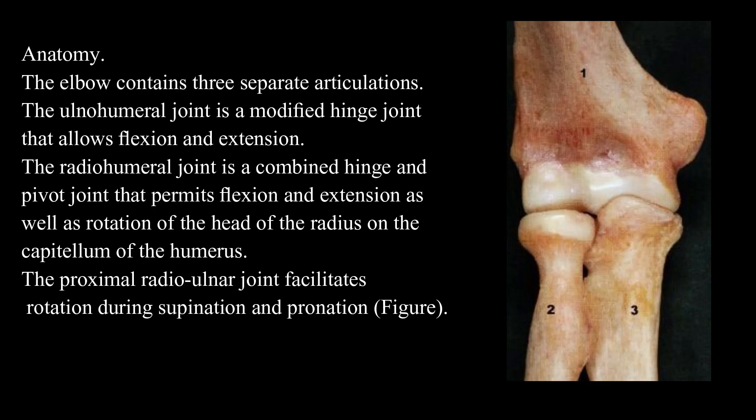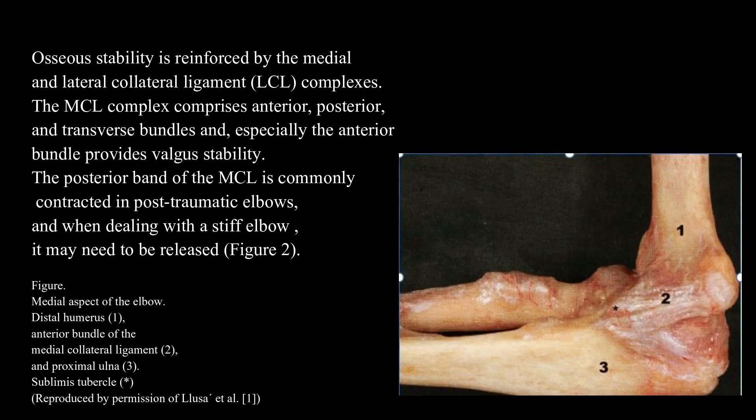Anatomy. The elbow contains three separate articulations. The ulnohumeral joint is a modified hinge joint that allows flexion and extension. The radiohumeral joint is a combined hinge and pivot joint that permits flexion and extension as well as rotation of the head of the radius on the capitellum of the humerus. The proximal radioulnar joint facilitates rotation during supination and pronation. Osseous stability is reinforced by the medial and lateral collateral ligament complexes.